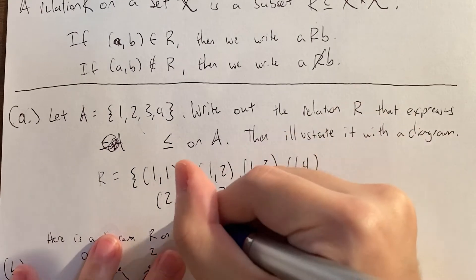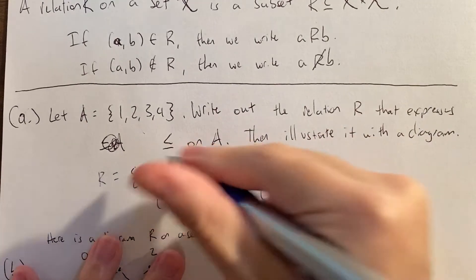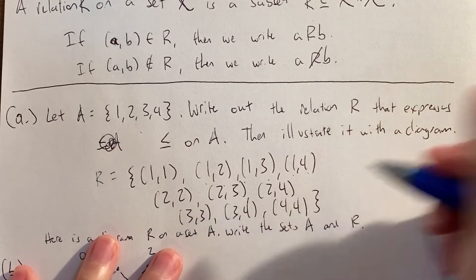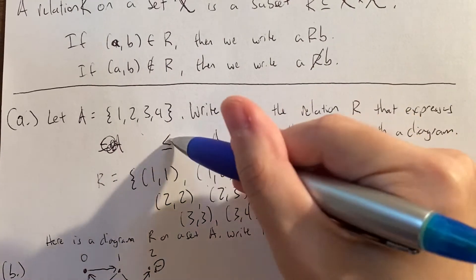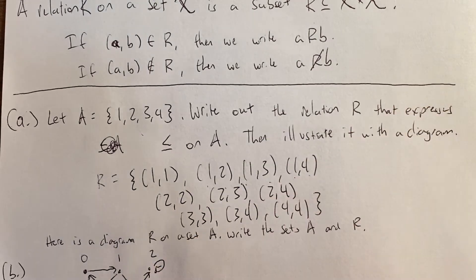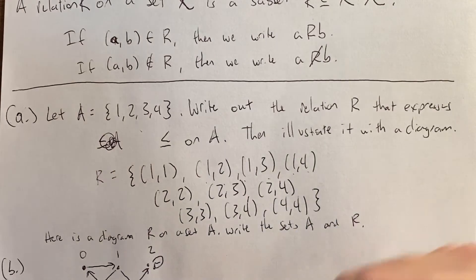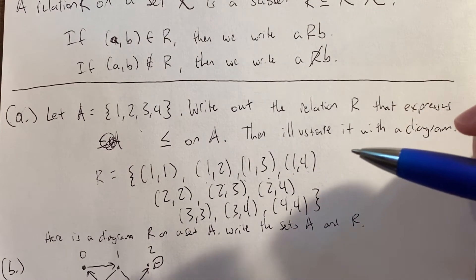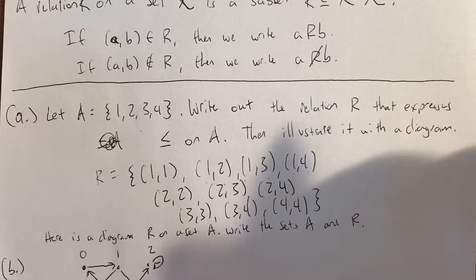Finishing off the relation: (3, 3) is in R, (3, 4) is in R because 3 ≤ 4, and (4, 4) is in R. So this is our relation — you're in R if the first coordinate is less than or equal to the second coordinate. Elements not in this relation include (4, 1) because 4 is not less than or equal to 1, and (3, 2) because 3 is not less than or equal to 2.